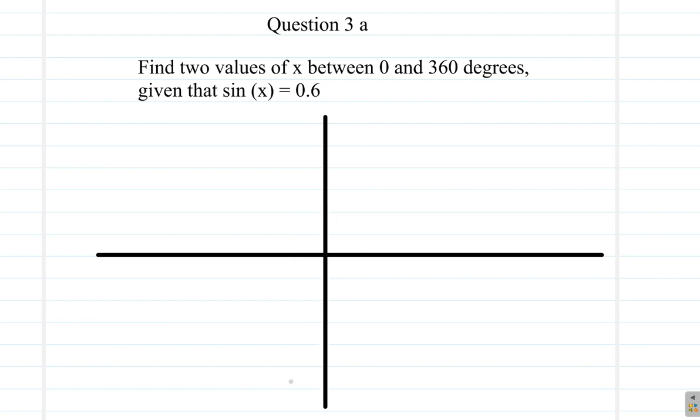Now, here, the sine of an angle is 0.6. So, if we draw a triangle here, sine is opposite over hypotenuse. So, let's say we have our triangle right here. This is our triangle. Now, this is the x, the angle x. Our angle x is here.